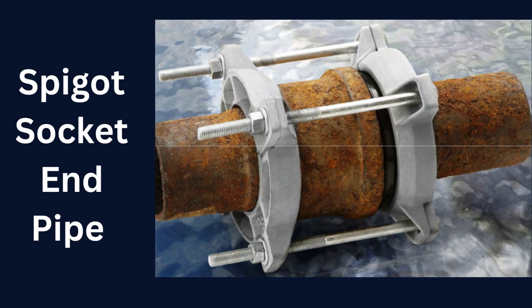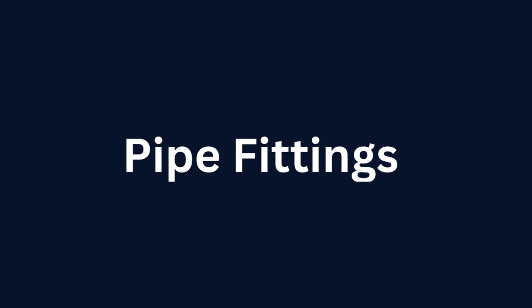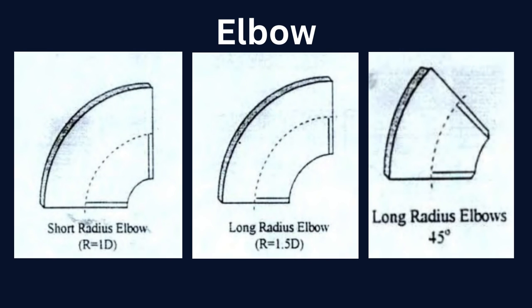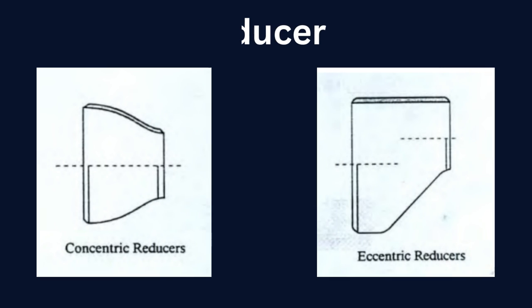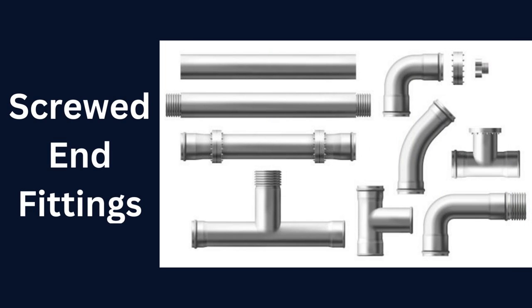Stub end connections and spigot socket pipe joints — you can refer to the figures. We will discuss in detail each type of end connection in a separate video. Next topic is pipe fittings. In industries, various fittings are used for routing of the pipe. For example, if we want to change the elevation of a pipe we can use an elbow; if we want to reduce the pipe size we can use a reducer; if we want to expand the pipe size we can use an expander; for a branch from the mainstream line we can use a T, etc. For pipe fittings — elbows include various types such as short radius elbow, long radius elbow, and long or short radius 45-degree elbow. For T, it can be equal T or reducing T. Reducers are classified as concentric reducer and eccentric reducer. As with end connections for pipes, fittings are also classified as screwed end fittings and butt weld fittings.